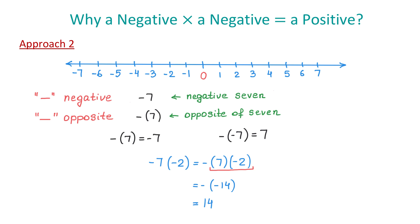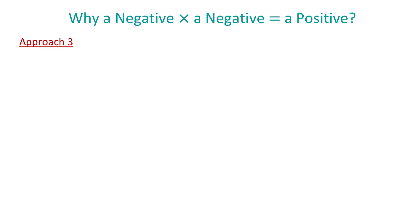Now let's look at approach number 3. In everyday life, we use positive numbers to represent the cash or assets we might have, and we use negative numbers to represent any debt we might have. So, we could interpret the expression negative 7 times 2 as accumulating a debt of 7 dollars twice. If we write this expression as negative 7 plus another negative 7, then we will have a total debt of 14 dollars.